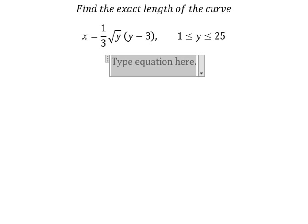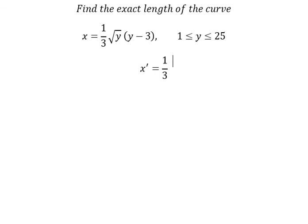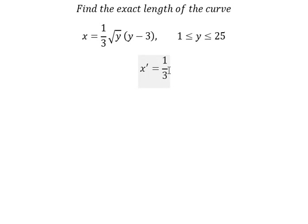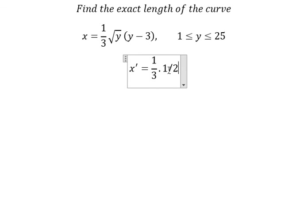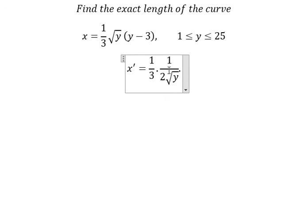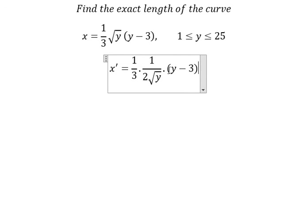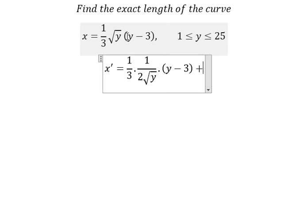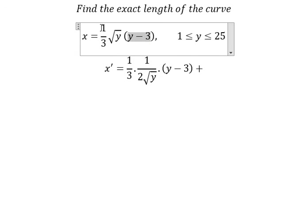First, we need to find the first derivative of the function. We do the first derivative of the square root of y. So we will have 1 over 2 square root of y, multiplied by y minus 3. Plus, we do the first derivative of this one, so we just have this one left.